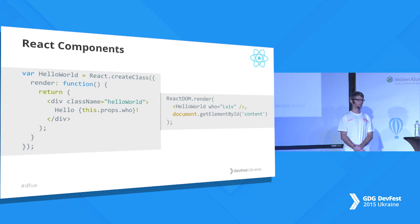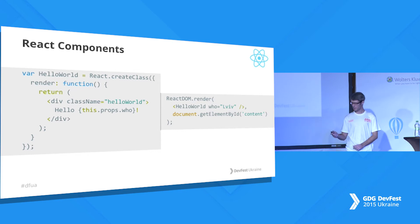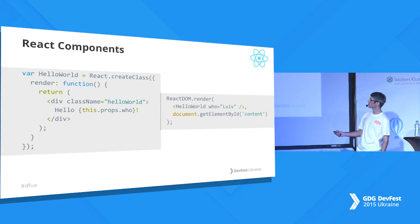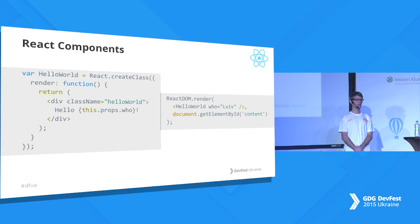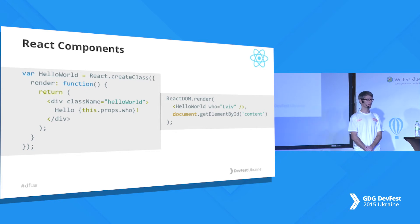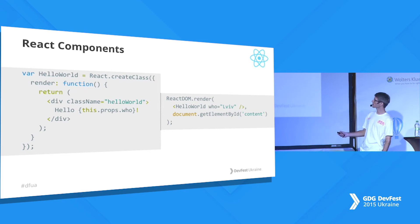There's no need to write it in JavaScript and then compile it. You can see there is a difference — the class name has a capital letter because class is a reserved word in JavaScript, so you write className instead. You can render these elements and bind them to your models.